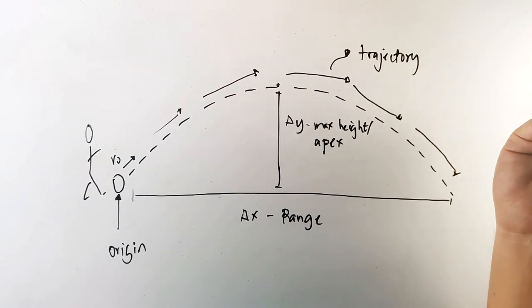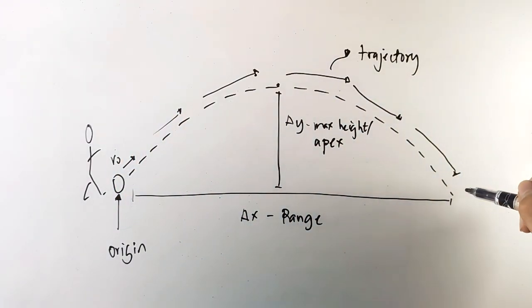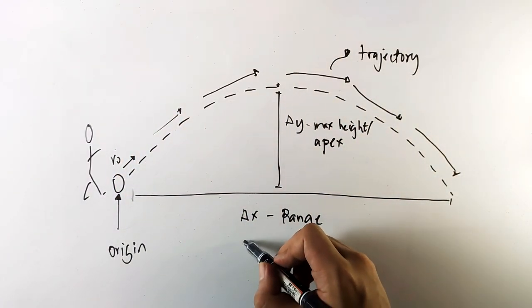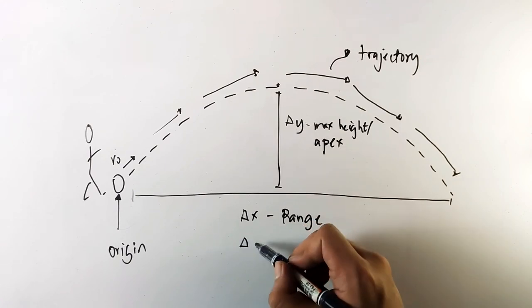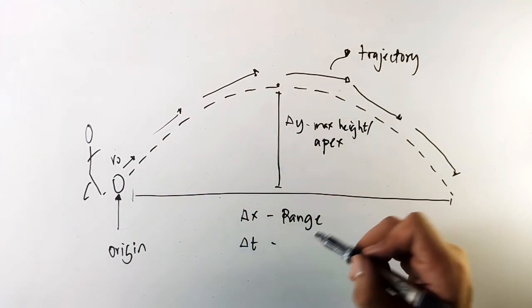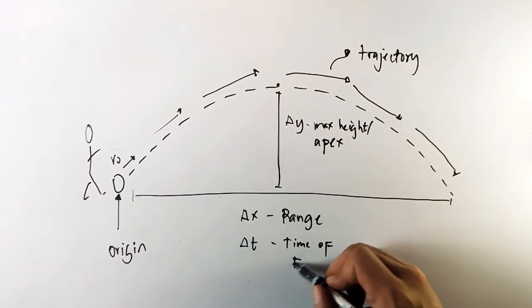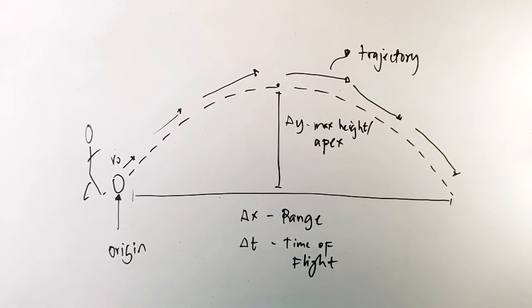There's the time it took for this thing to reach the other end. That's time. It's named as delta t, which is the total time that it took for that object to fly. That's called the time of flight. The thing that you have to remember...